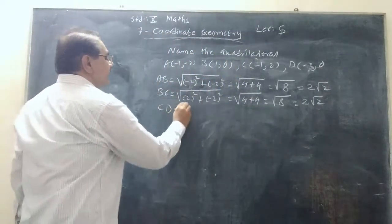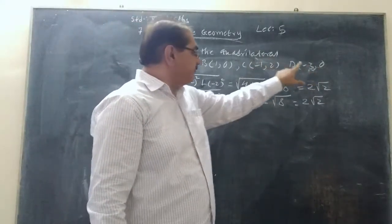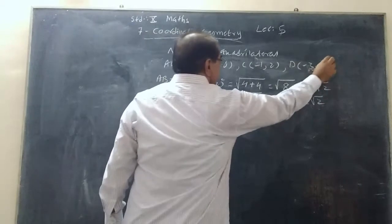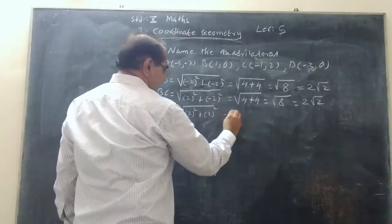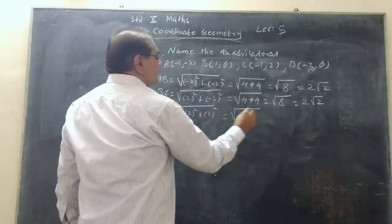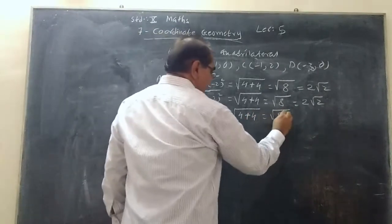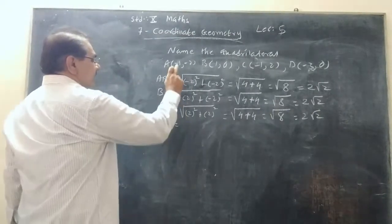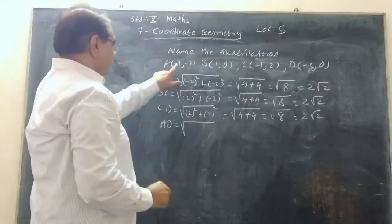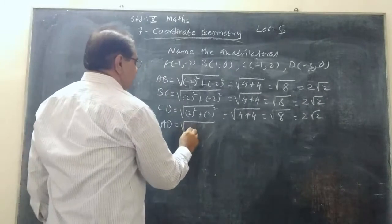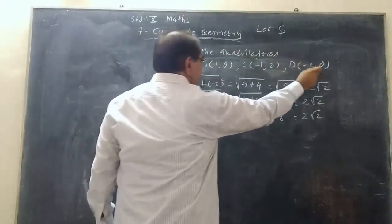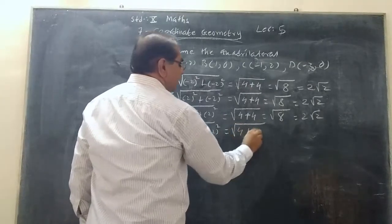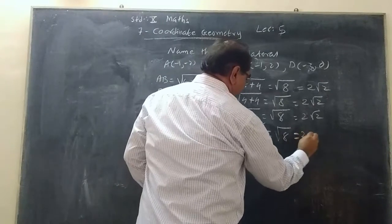Now go for CD: √[(-1-(-3))² + (2-0)²] = √[(2)² + (2)²] = √[4+4] = √8 = 2√2. Now go for AD, the fourth side: √[(-1-(-3))² + (-2-0)²] = √[2² + (-2)²] = √8 = 2√2.